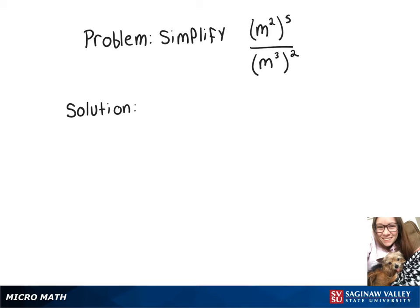To simplify this expression, we'll start by multiplying our exponents that are being raised to powers. So on top we'll do m to the 2 times 5, and on bottom we'll do m to the 3 times 2. Now we've got m to the 10th over m to the 6th.